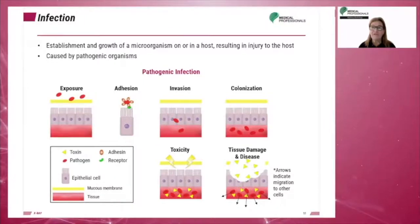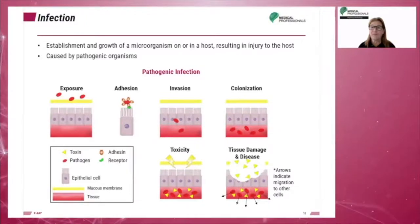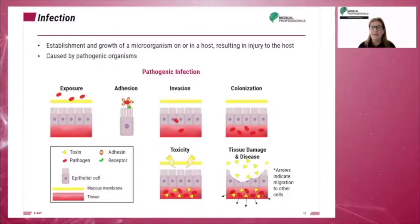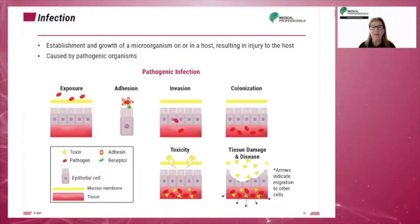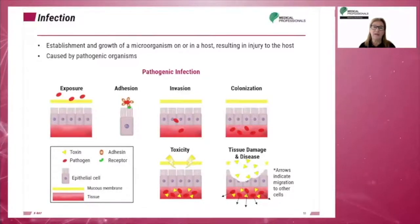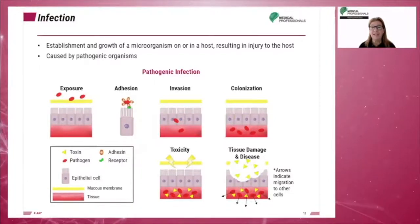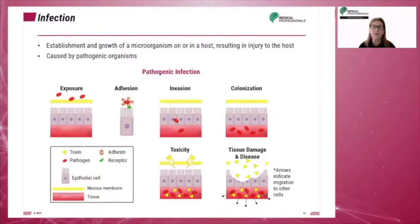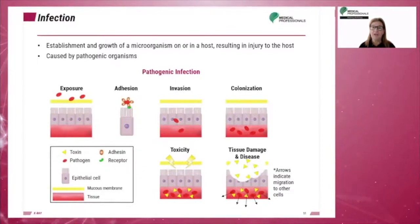After the invasion, the pathogen proliferates inside the tissue. We call this phase the colonization. The toxicity phase starts when the pathogens produce toxins that attack the mucous membrane of the tissue. Finally, the tissue damage and disease phase happens when the toxins break through the mucous membrane and the pathogens migrate to other cells.